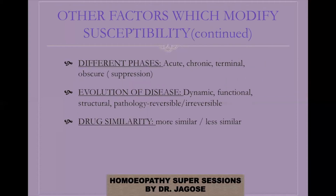Even at different phases of the disease, susceptibility will vary, so you have to identify the phase. It could be an acute phase, chronic phase, terminal phase, obscure phase, one-sided disease, episodic, intermittent, or periodic disease. For example, in an acute phase, symptoms are characteristic with a sudden output of latent psora, and susceptibility is generally high.